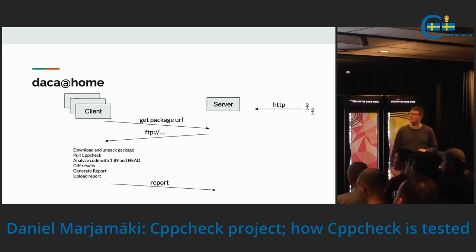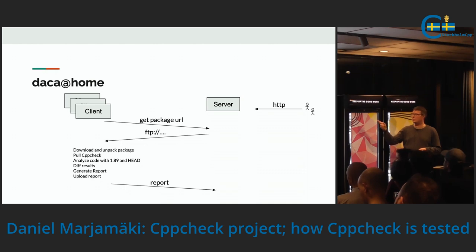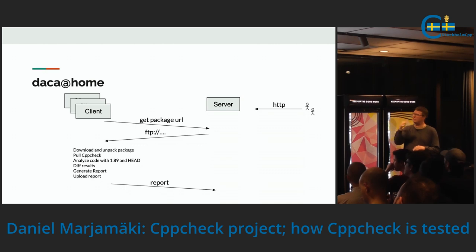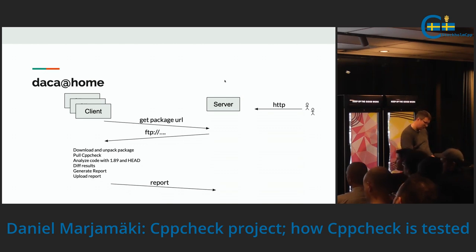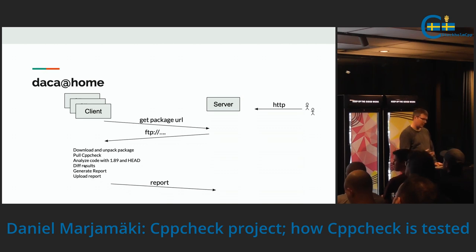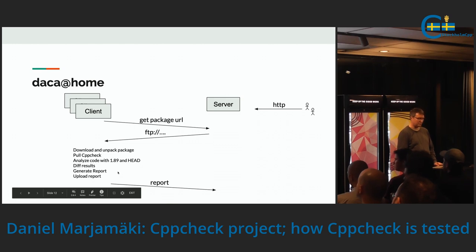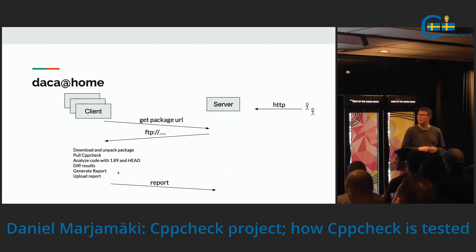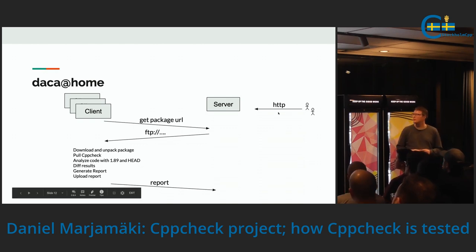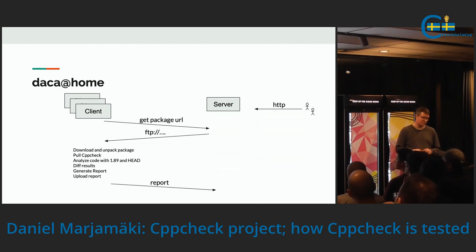So this is what happens: we have a number of clients in the world and one server. Each client will request a command — get package URL — and the server has a list of 30,000 URLs, so it sends back one URL at a time. Each client then downloads and unpacks the package, pulls CppCheck head, and analyzes the code with both the latest release and head so we can compare warnings. It diffs the results, generates a report, and uploads it. All this is done in a very simple textual format. The server also has an HTTP interface so users can look at the results in real time.